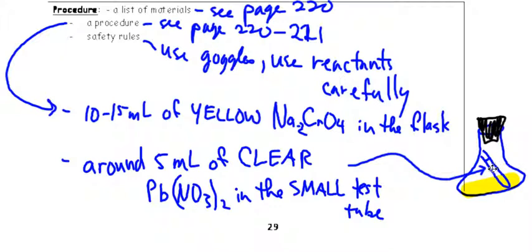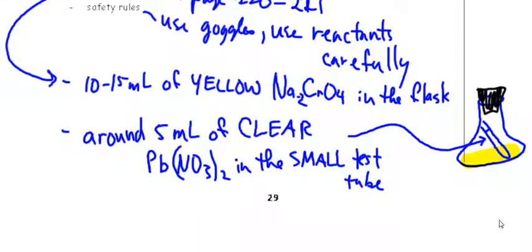A stopper. A little test tube. And inside the test tube, around 5 milliliters of lead nitrate. You'll see it, it's labeled in the lab there. It's clear. And basically, put the yellow sodium chromate in the bottom. Put your 5 mils of lead nitrate in the test tube. Carefully put the test tube in there, so as the reactants do not mix just yet.